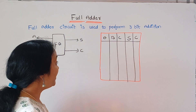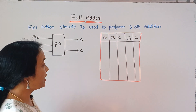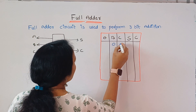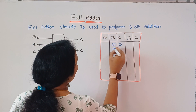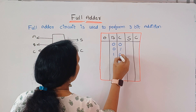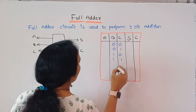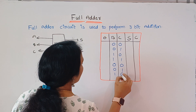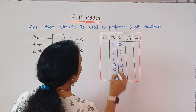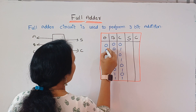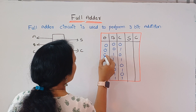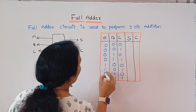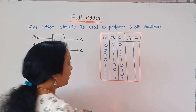For this 3-bit addition, we draw the truth table with inputs A, B, C. The combinations are: 0,0,0 then 0,0,1 then 0,1,0 then 0,1,1 — that's the first four rows. Then again 1,0,0 then 1,0,1 then 1,1,0 then 1,1,1 — making 4 zeros followed by 4 ones for input A.